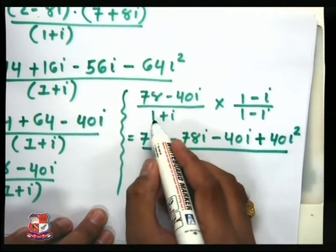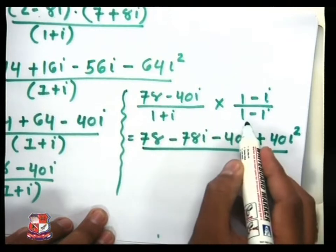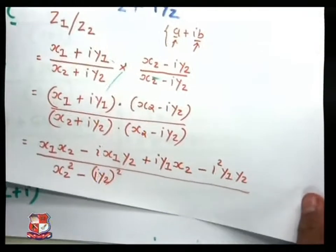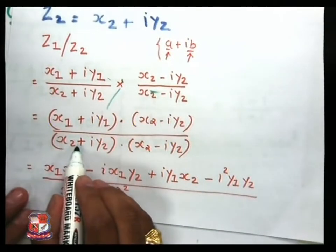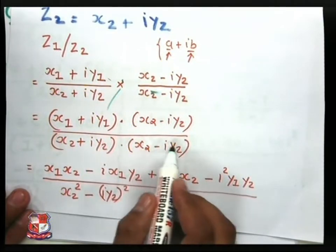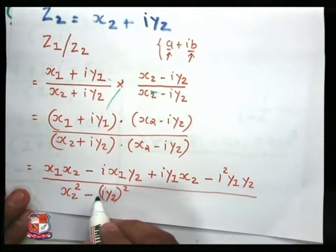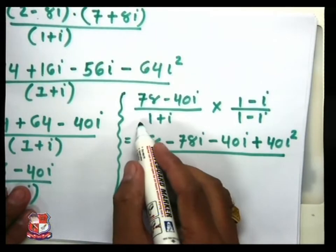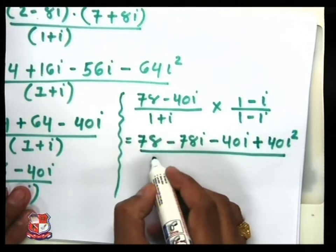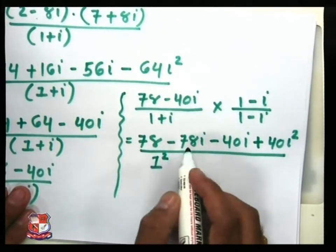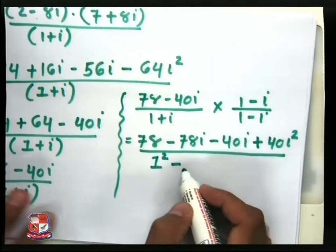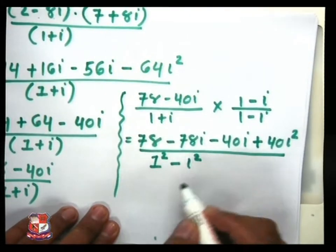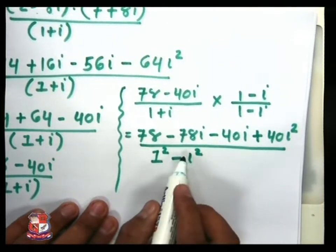For the division of 1 plus i and 1 minus i, using our theory, we take directly the multiplication of the a plus b and a minus b form, which is nothing but a squared minus b squared. So we can write the result as a squared, that is 1 squared, take minus sign, b squared, that is i squared.